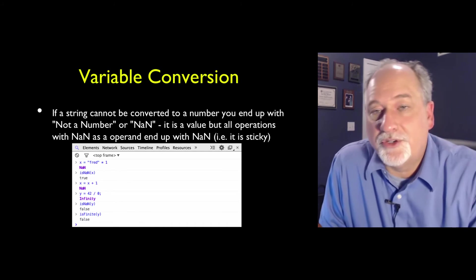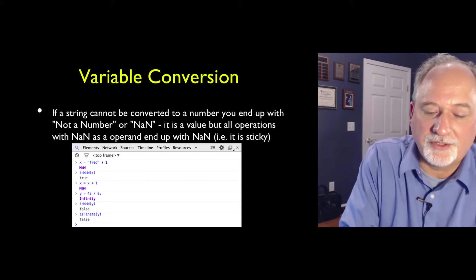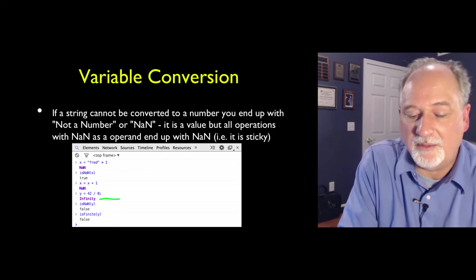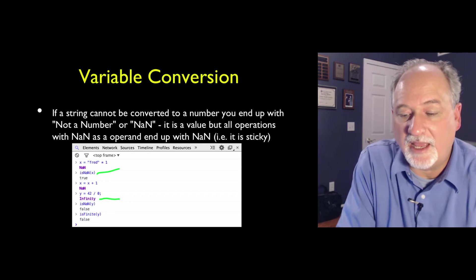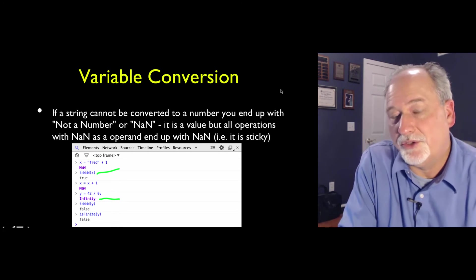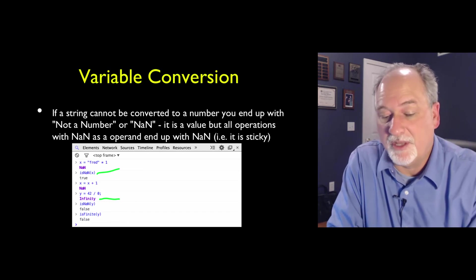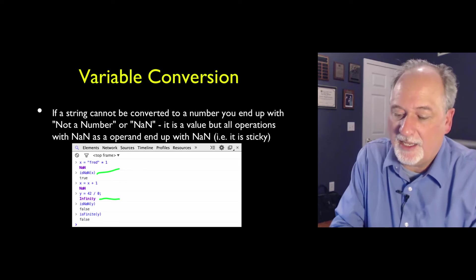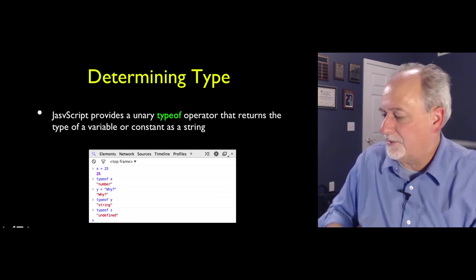It does variable conversion. It's a little bit different. We can also end up with infinity by dividing by zero by mistake. There is an isNaN function. And so we can do these kinds of things. But in general, we just sort of avoid doing silly things like multiplying fred by one or dividing an integer by zero in JavaScript. So these are just some functions that you can play with.